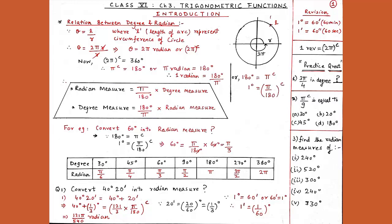As you can see in the table: 30 degrees is π/6, 45 degrees is π/4, 60 degrees is π/3, 90 degrees is π/2, 180 degrees is π, 270 degrees is 3π/2, and 360 degrees is 2π. Whenever you convert degree into radian, always multiply by π upon 180, and when converting radian into degree, multiply by 180 degrees upon π.